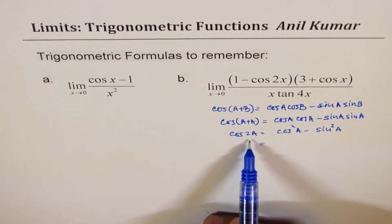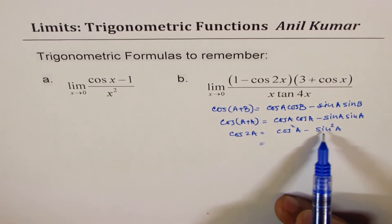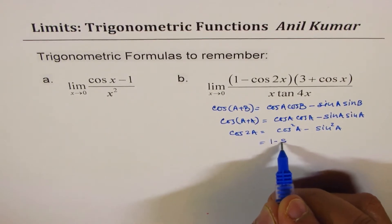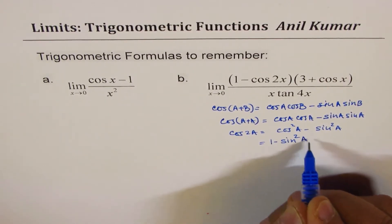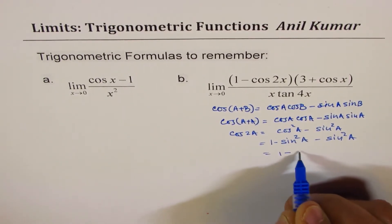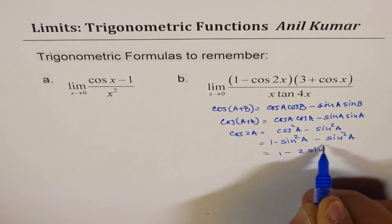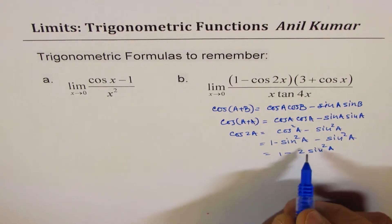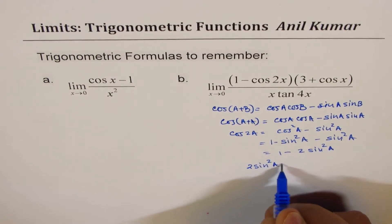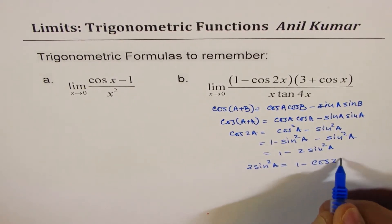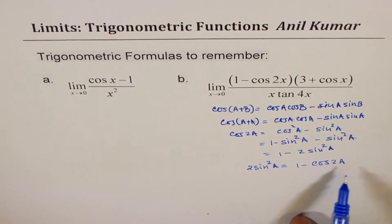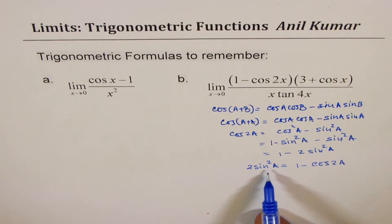Now, cos 2a can be written in terms of sin squared. If I replace cos squared a with 1 minus sin squared a, we already have minus sin squared a here. So I could write this as 1 minus 2 sin squared a. Rearranging, I get 2 sin squared a equals 1 minus cos 2a.